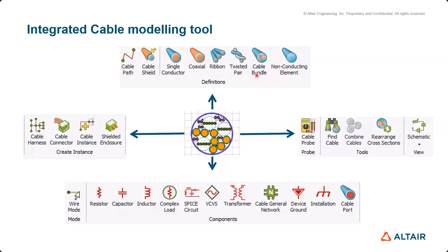You can also add shields to your cables — both single and double layer shields are supported. Users can specify shield properties either manually or customize them based on their requirements. Within the same model, you can create multiple cable harnesses in FICO, and each harness can contain a collection of cables, connectors, and probes. Each cable harness has its own separate schematic view, which allows users to load or excite their cables or connect them to SPICE circuits.